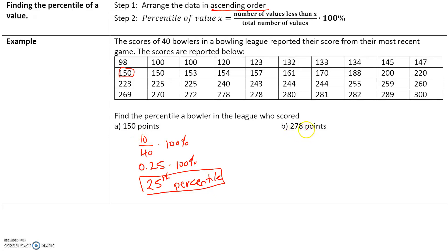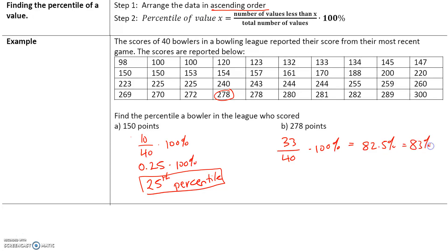Now let's take a look at 278. We want to figure out what percent of bowlers a score of 278 is better than. Counting the number of values less than 278 gives us 33. So 33 bowlers scored less than 278. We divide that by the total number of values, 40, and multiply by 100%, which comes out to 82.5%, which we can round to 83%. This tells us that 278 is in the 83rd percentile.